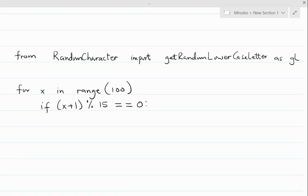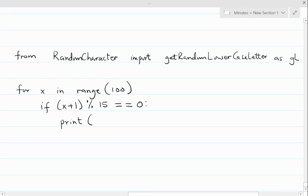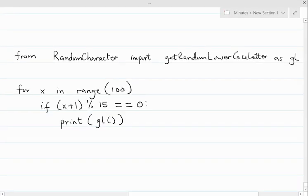So if x is actually a value as 15, we would want to print on the next line. So we print gl. gl is a method so we end it with this parentheses.